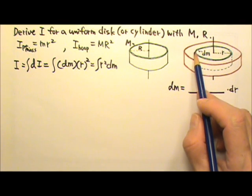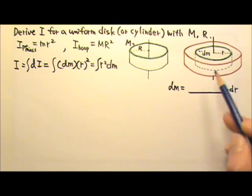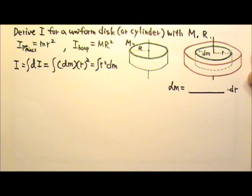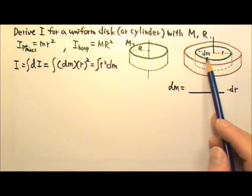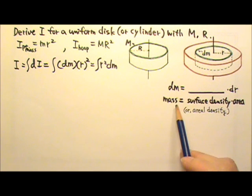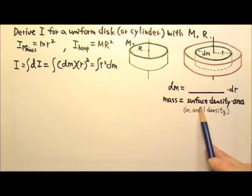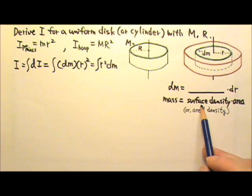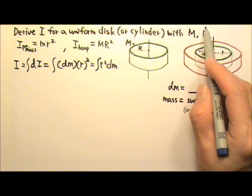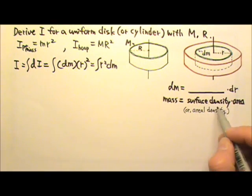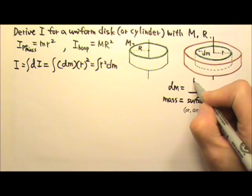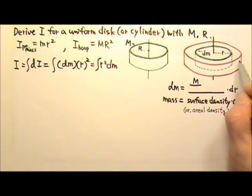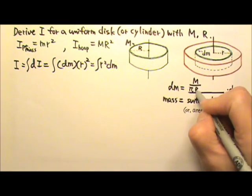dm is the mass of this thin hoop. Because the disc has the same thickness throughout, the mass is proportional to the top area. We can say that the mass is the surface density or area density times the surface area. The surface density is the mass per unit area. The disc has the mass m and the radius r. So the mass per unit area is the mass m divided by the top area of the disc, π big R².